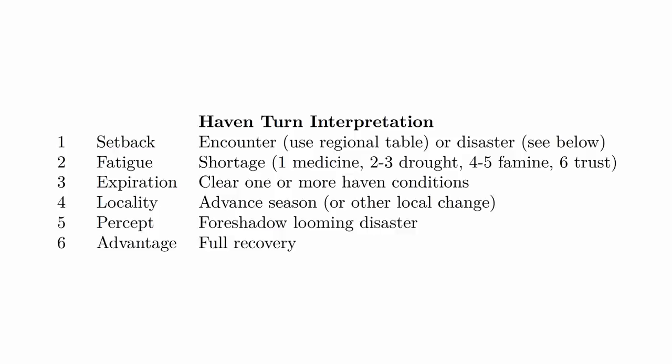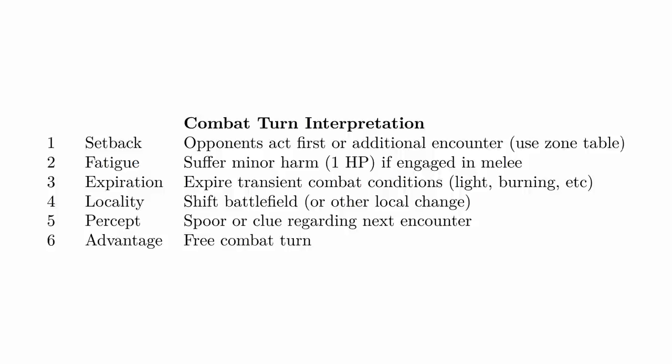In the full Hazard System, you can also use it for haven or city turns, and you can also use it for combat. A haven turn could be up to weeks of time, and that could generate an encounter, a shortage in the city, clearing one or more haven conditions, advancing the season or other local change, a foreshadowing of a looming disaster, or a full recovery where your characters are fully healed. If you use the Hazard System in combat, you roll the hazard die every round, which generates complications like opponents acting first, additional encounters or reinforcements arriving, minor harm from weariness, torches burning out in melee, battlefield shifts, or a clue to the next encounter.